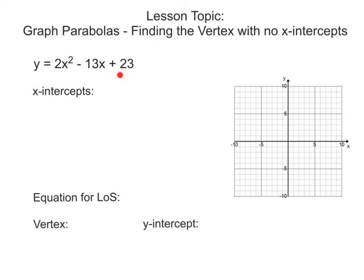I'm going to show one example in standard form and one example in vertex form. We start by thinking about our x-intercepts — the x value when y equals 0. We can have one, two, or in some cases none. So we put 0 in for y and go through our solving steps. The first thing you'll notice is this equation is not in vertex form, so we need to solve by using factoring or the quadratic formula.